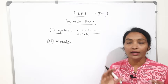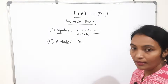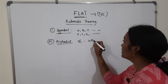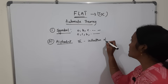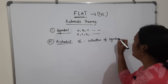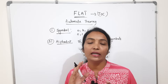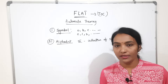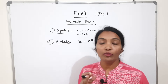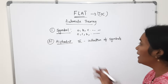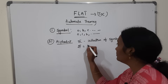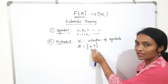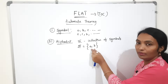Alphabet — what is an alphabet? An alphabet is nothing but a collection of symbols. It is represented with sigma. Sigma is the summation symbol — it represents a collection of symbols. For example, if I write {A, B}, these two are symbols, and the collection of this set is the alphabet. Similarly, {0, 1} is also an alphabet. Collection of symbols is nothing but the alphabet.